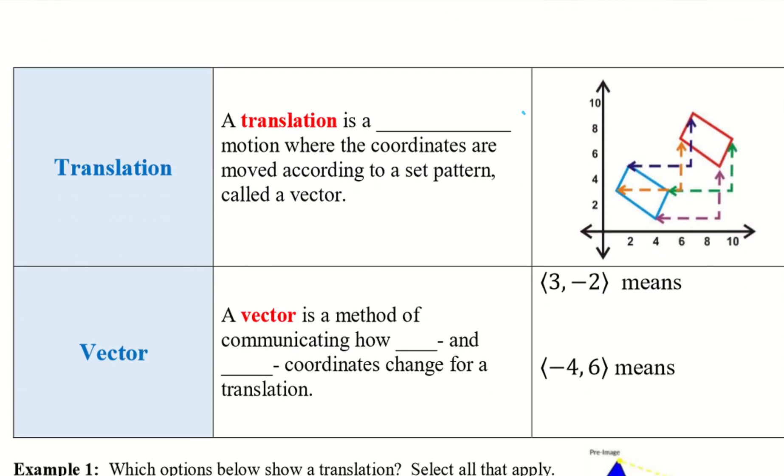So let's get into some vocabulary. So a translation is a transformation motion where the coordinates are moved according to a set pattern called a vector. So we can see if I take a look at this orange line, we move to the right and go up. Or if I was going from the orange to the blue, I was going down and then to the left.